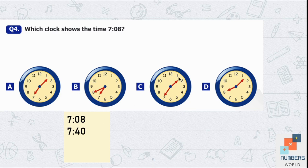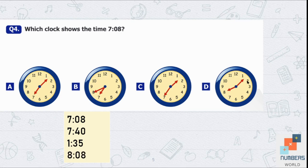In option C the hour hand is between 1 and 2, so the hour is 1, and the minutes hand is at 7 — 5 sevens are 35 — so the time is 1:35. In option D the hour hand is at 8 and the minutes hand is between 1 and 2, so it's 8:08. The question asks which clock shows 7:08, so option A is the correct one.